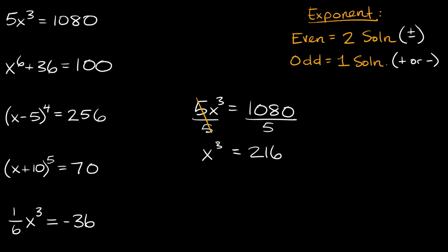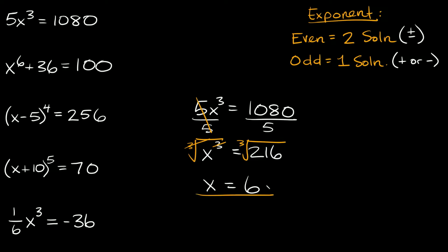Now in order to get rid of this exponent we need to take the cube root of both sides. The cube root and the cubed exponent cancel each other out, so we're left with x is equal to the cube root of 216, which is equal to 6. Because 6 times 6 times 6 is equal to 216. So our answer is x is equal to 6.